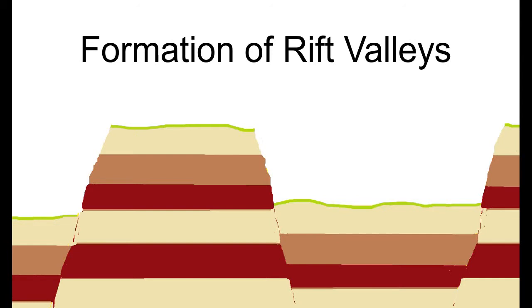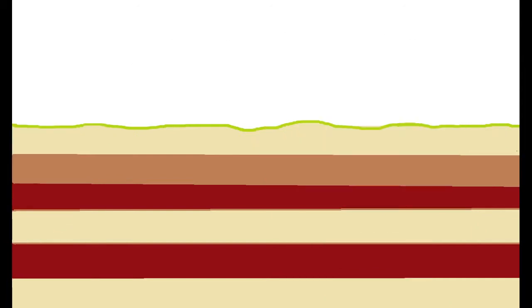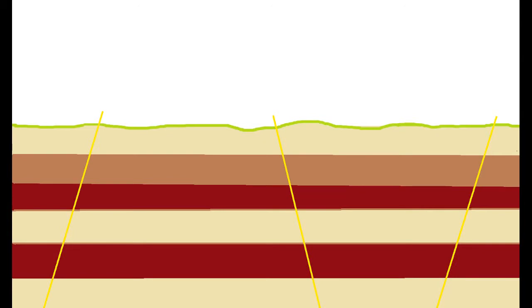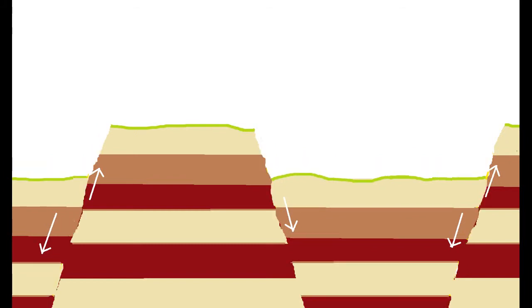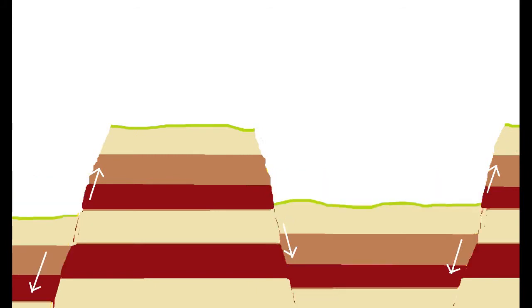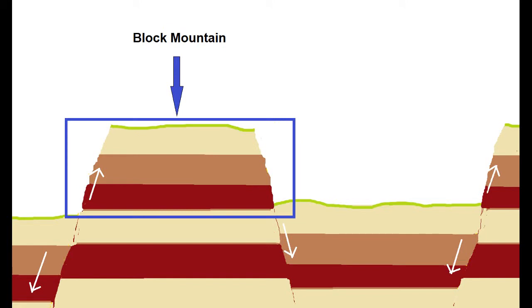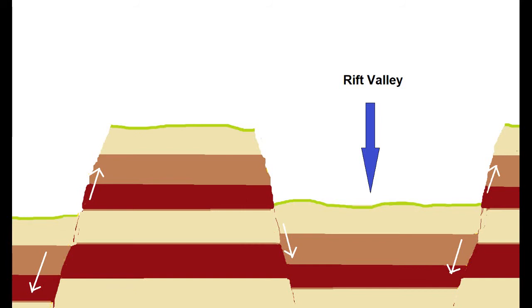The last topic is the formation of rift valleys. A rift valley forms when areas of the earth's surface move away from each other. As a result, little cracks and faults form within the crust. As the earth separates, certain parts along those faults start to move downward while the rest stay in place, and valleys begin to form — we call these rift valleys. The resulting landforms are block mountains, shaped like a block, and rift valleys, which are slightly more block-shaped than the traditional U- or V-shaped valleys.